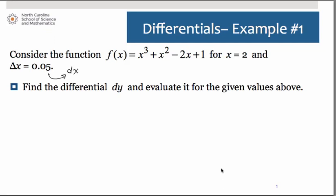The first thing we're asked to do here is to calculate the differential dy and evaluate it for the x value of 2. Remember how we calculate our differential: dy is going to be equal to f prime of x times dx. We know dx, that's 0.05. We just need to calculate the derivative and we are going to do this for the x value of 2.